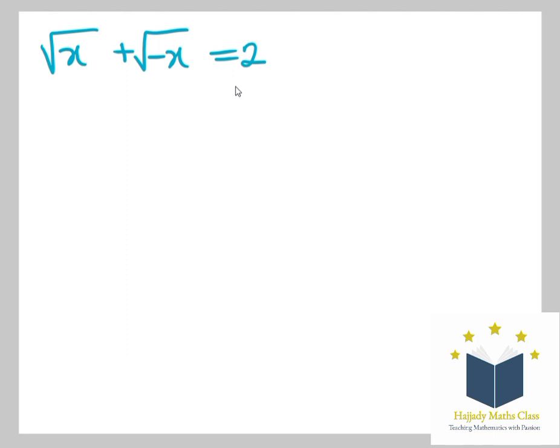So in solving this, we have that √x equals 2, moving the +√(-x) to the other side. I'm going to have -√(-x).